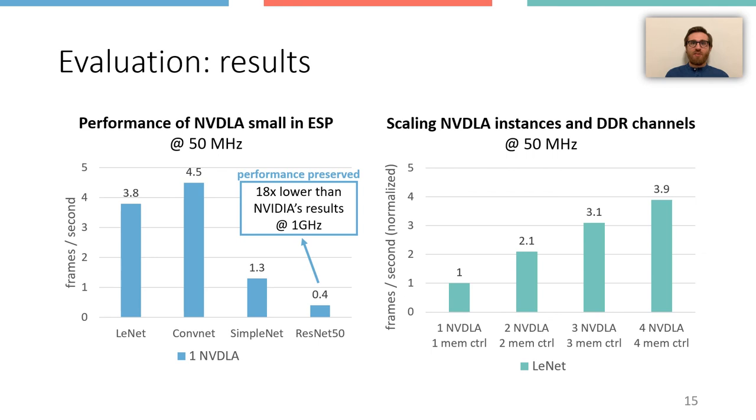The graph on the right shows the results for four SoC configurations, each with an increasing number of NVDLA instances and memory channels utilized in parallel. These results are for the LeNet network processing the MNIST dataset. The task parallelization delivers an approximately linear increase in performance and confirms the scalability properties of the ESP architecture. For instance, an SoC configuration with four NVDLA instances and four memory channels delivers a 4x speedup for the LeNet network.